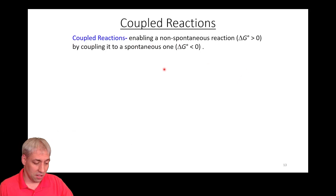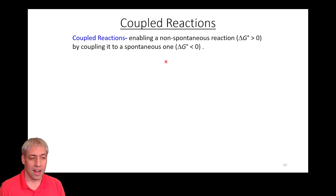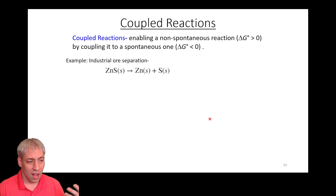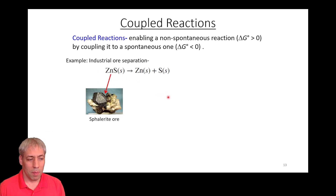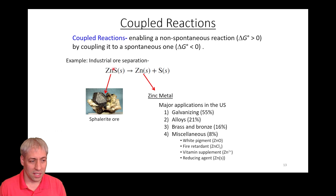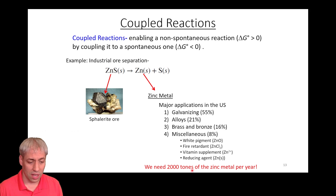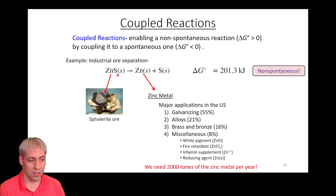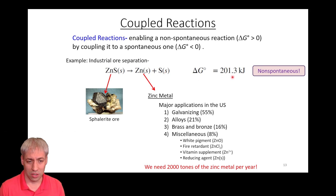What about non-spontaneous reactions? There are certain important non-spontaneous reactions that we still need to make happen. One way to drive a reaction where delta G is positive is to couple it to a reaction with a negative delta G. For example, in industrial ore processing: the thing you dig out of the ground is zinc sulfide, but we need metallic zinc — about 2,000 tons per year. The problem is converting zinc sulfide to zinc metal plus sulfur solid is non-spontaneous: delta G is positive 201.3 kJ/mol.